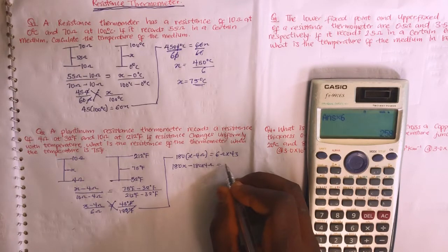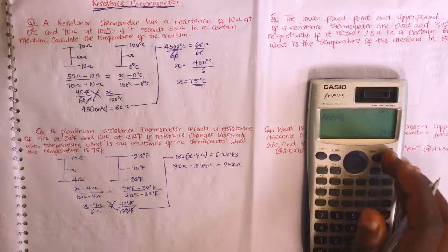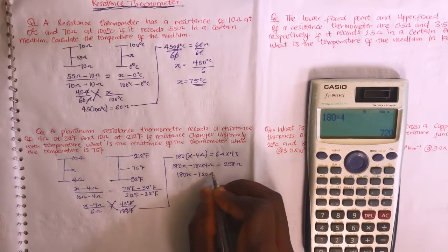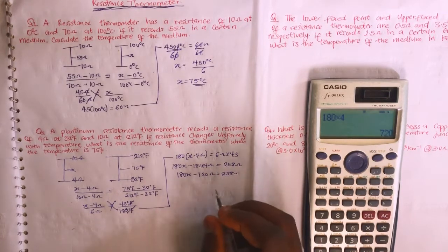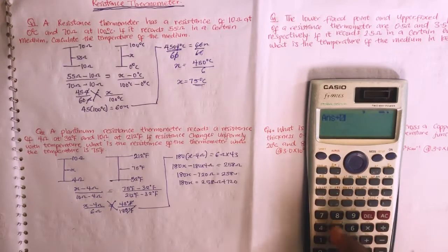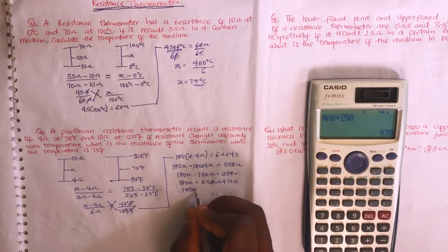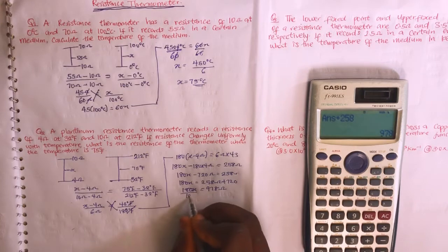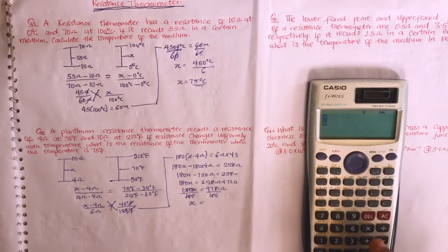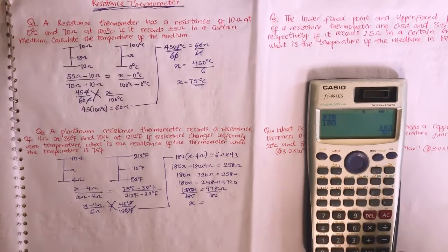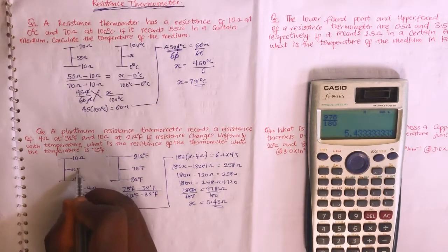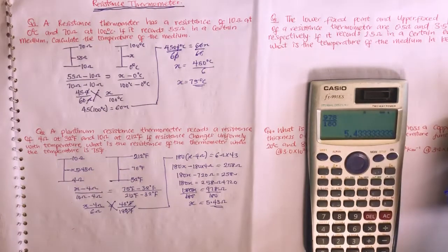Continuing: 180x − 720 = 258. Collecting like terms: 180x = 258 + 720 = 978. Dividing by 180: x = 978 / 180 = 5.43 ohms. So the resistance of the thermometer at 75°F is 5.43 ohms.